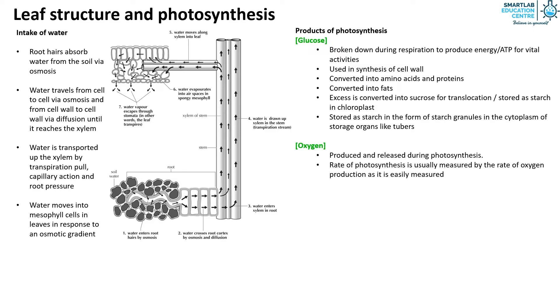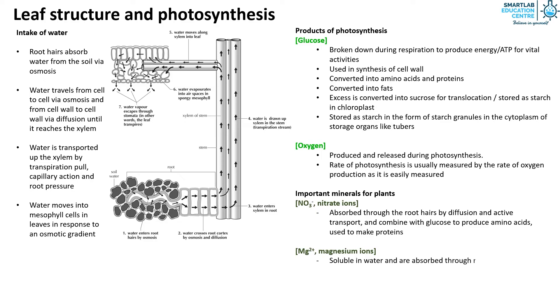Lastly we will end this video by looking at the important minerals for plants. Nitrate ions are absorbed through the root hairs by diffusion and active transport and combine with glucose to produce amino acids that are used to make proteins. Magnesium ions are soluble in water and are absorbed through root hairs by diffusion and active transport, used to make chlorophyll.